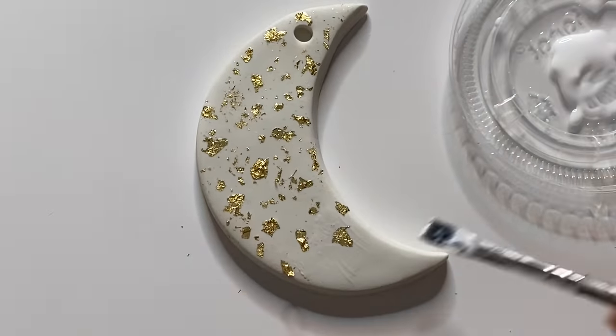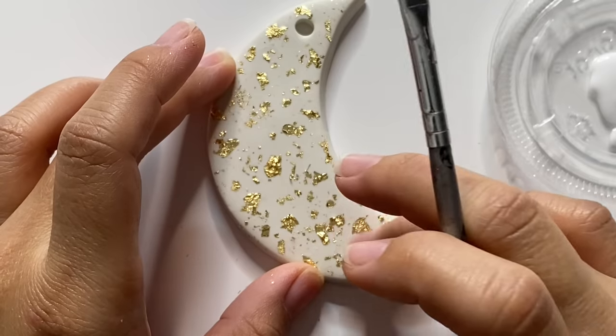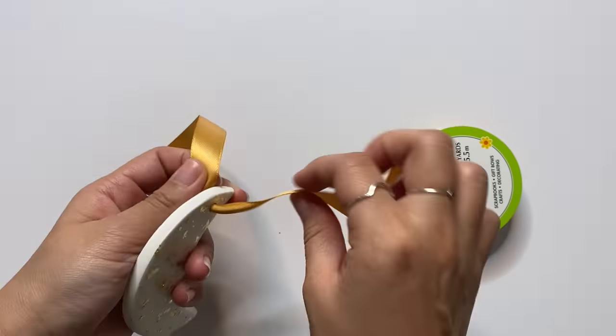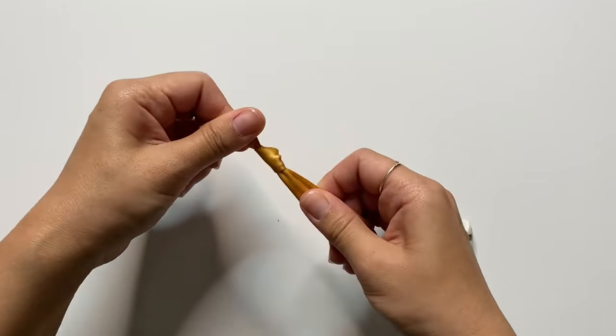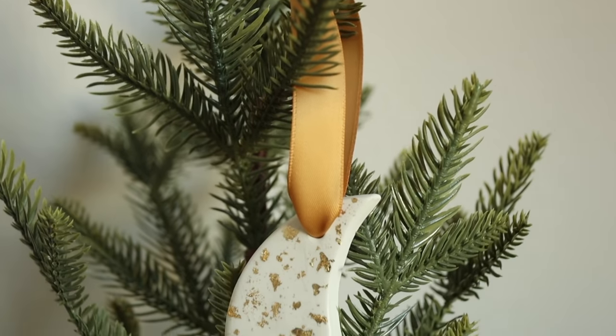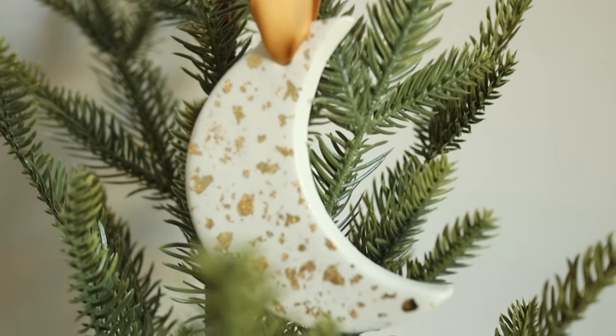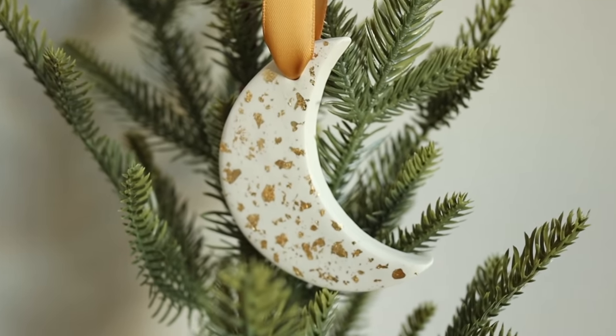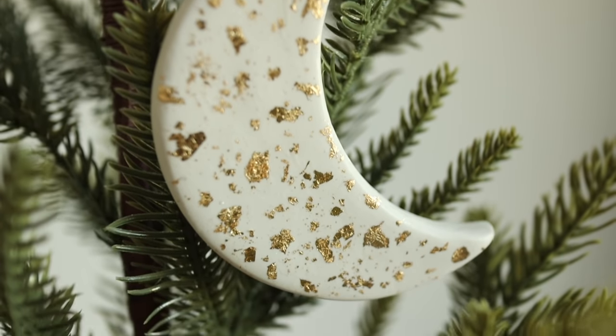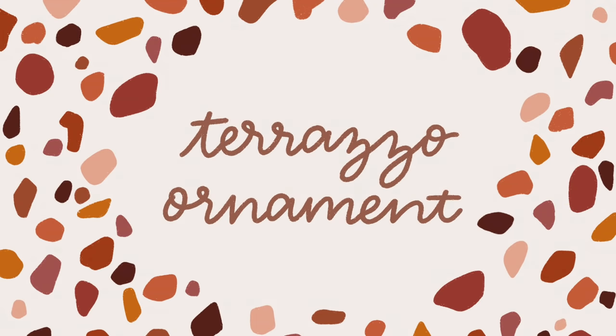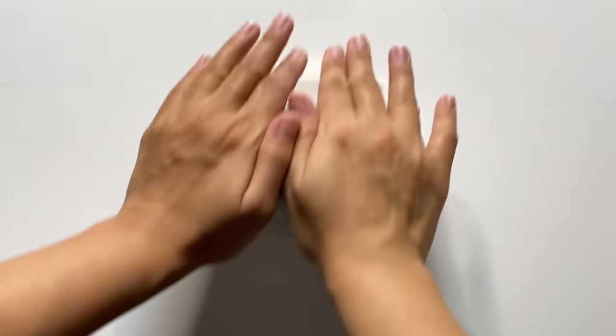I wanted these to be small little flakes and not larger chunks, so this technique worked out perfectly. Now I'm just going to repeat that all around my entire ornament. Just look at how cute it came out. For this one, I'm going to use a beautiful mustardy yellow ribbon, and I got this from Dollar Tree. I think it paired perfectly with this. This moon ornament was such a simple way to add in a little bit of sparkle to my holiday decor. I really love how the gold flakes just elevated it, and I can't wait to have this for so many years to come.